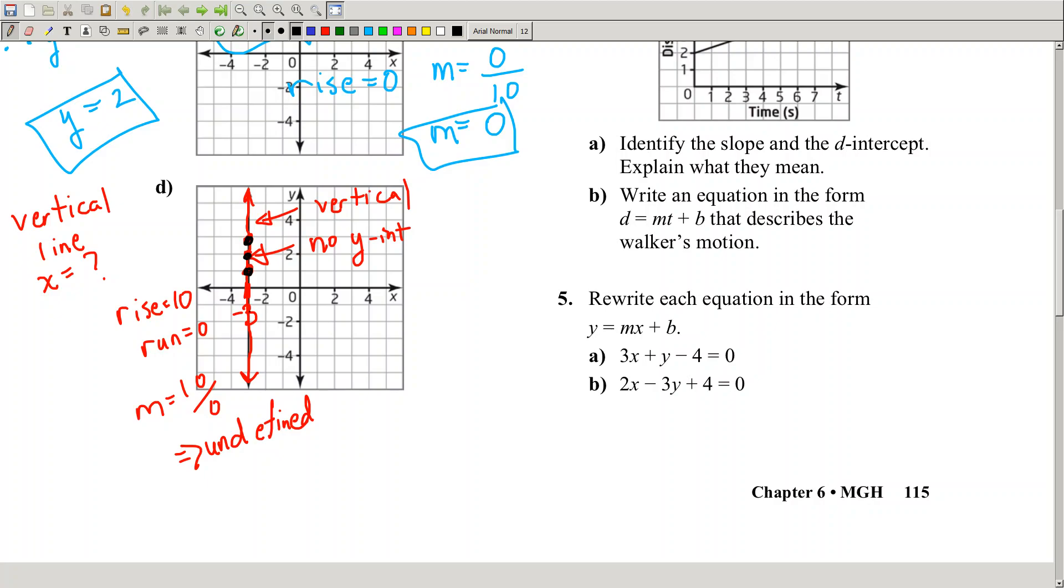All these points share a common x value. How do you write that as a single equation? You just say x equals negative 3. This is the equation of this vertical line.